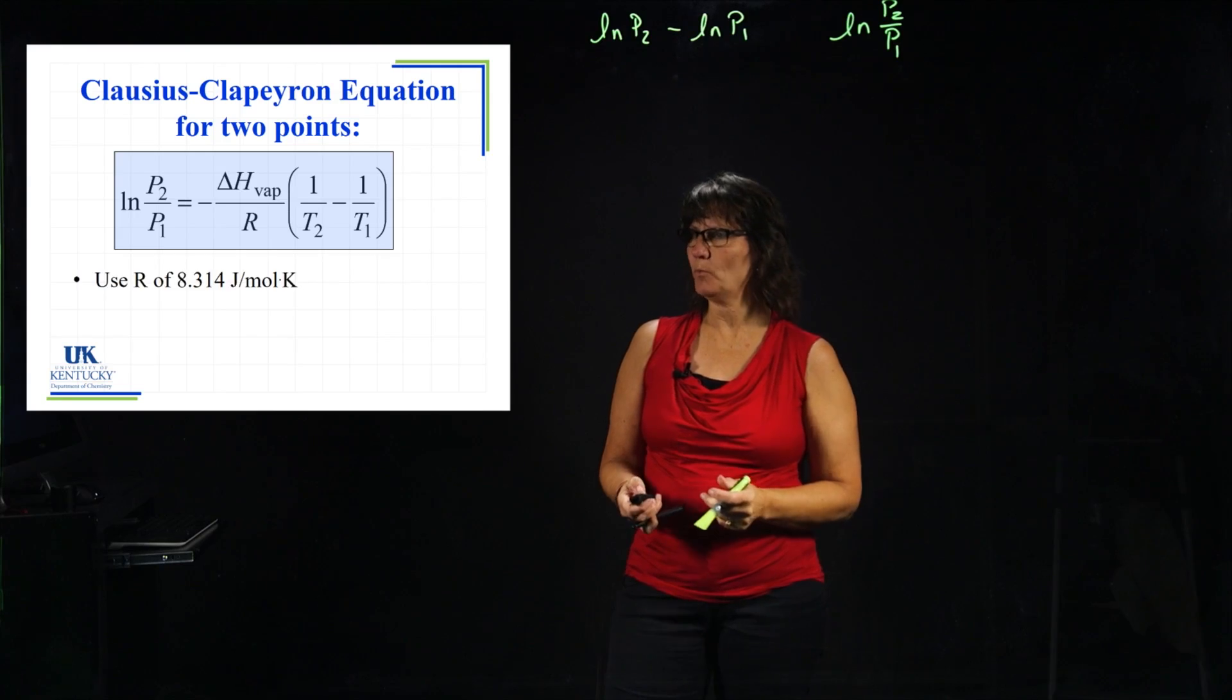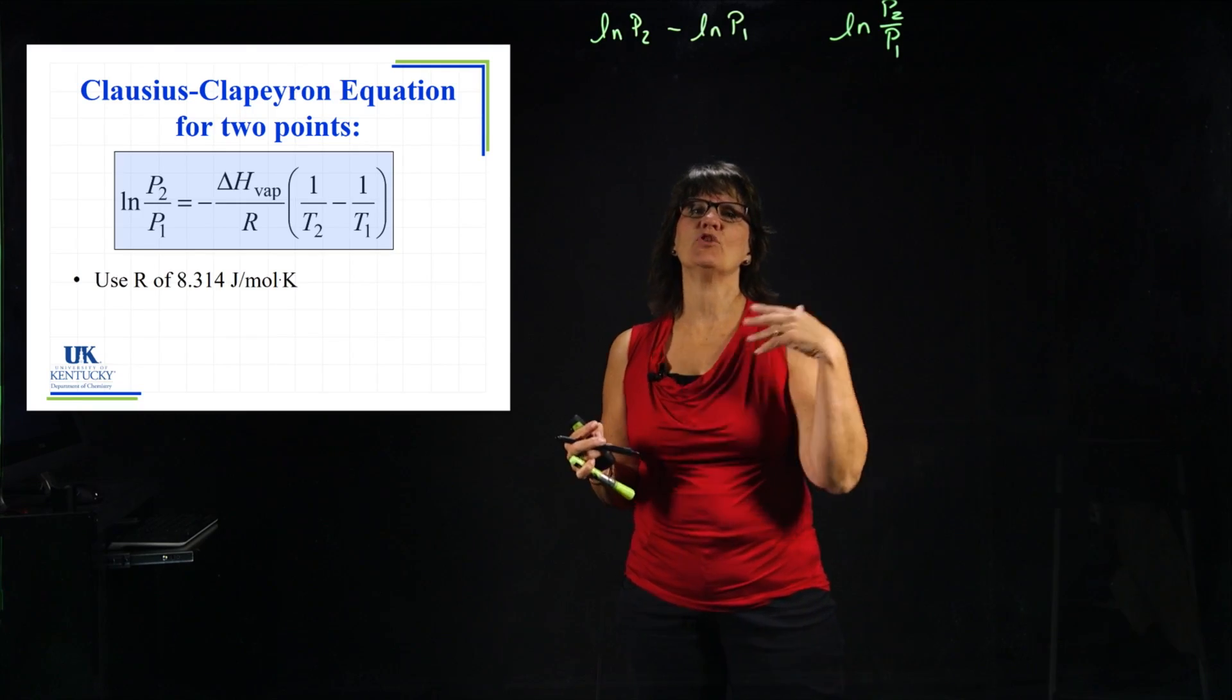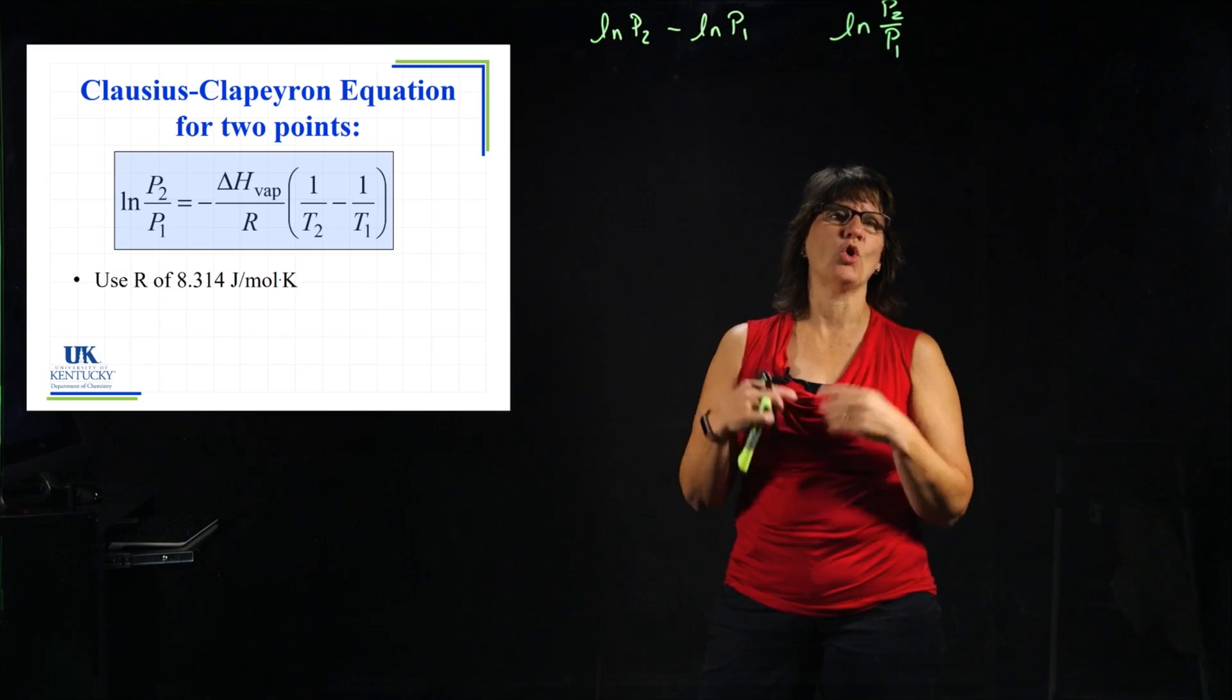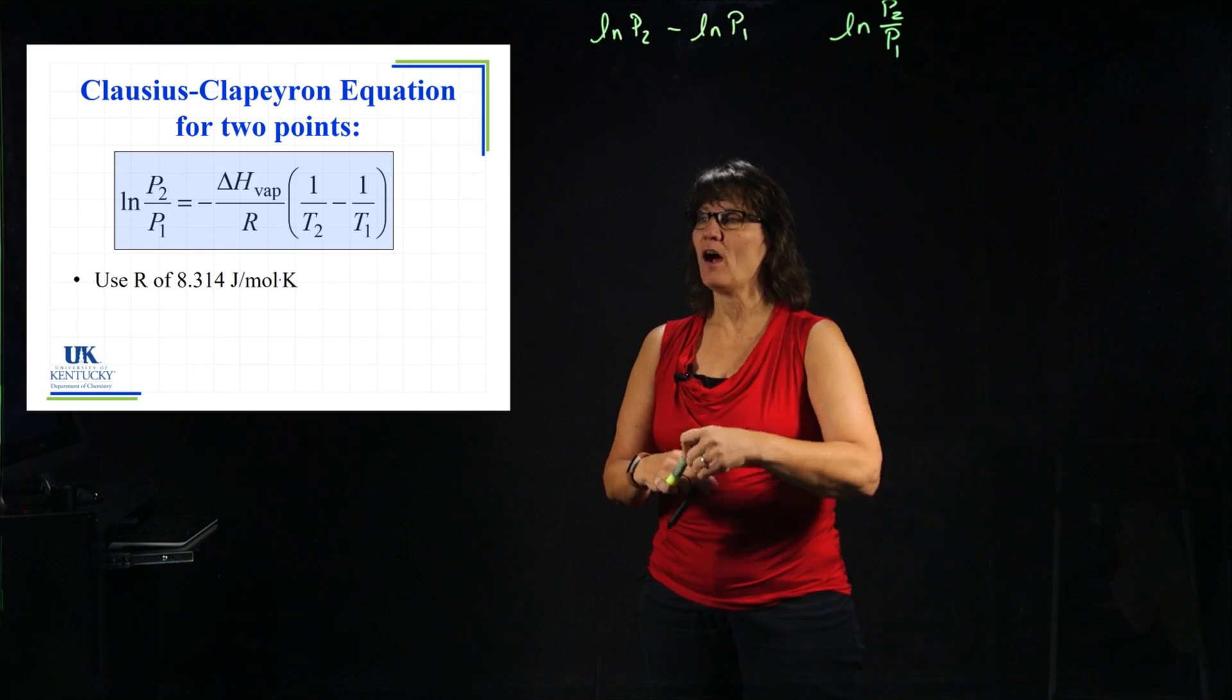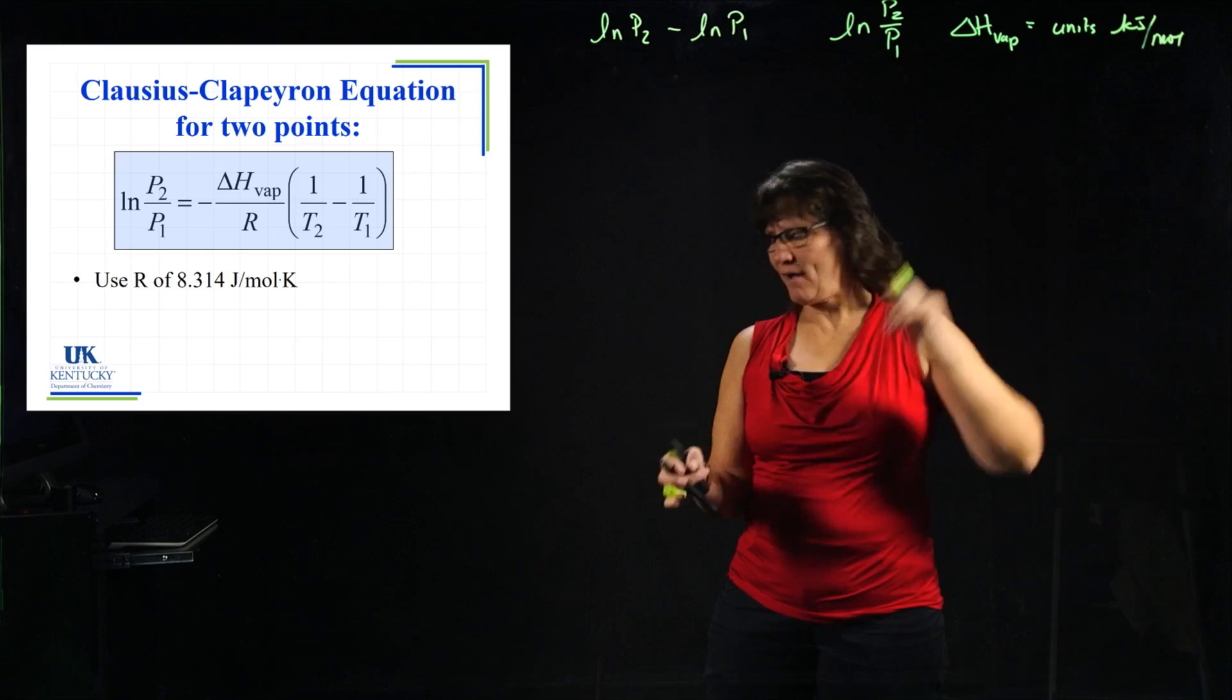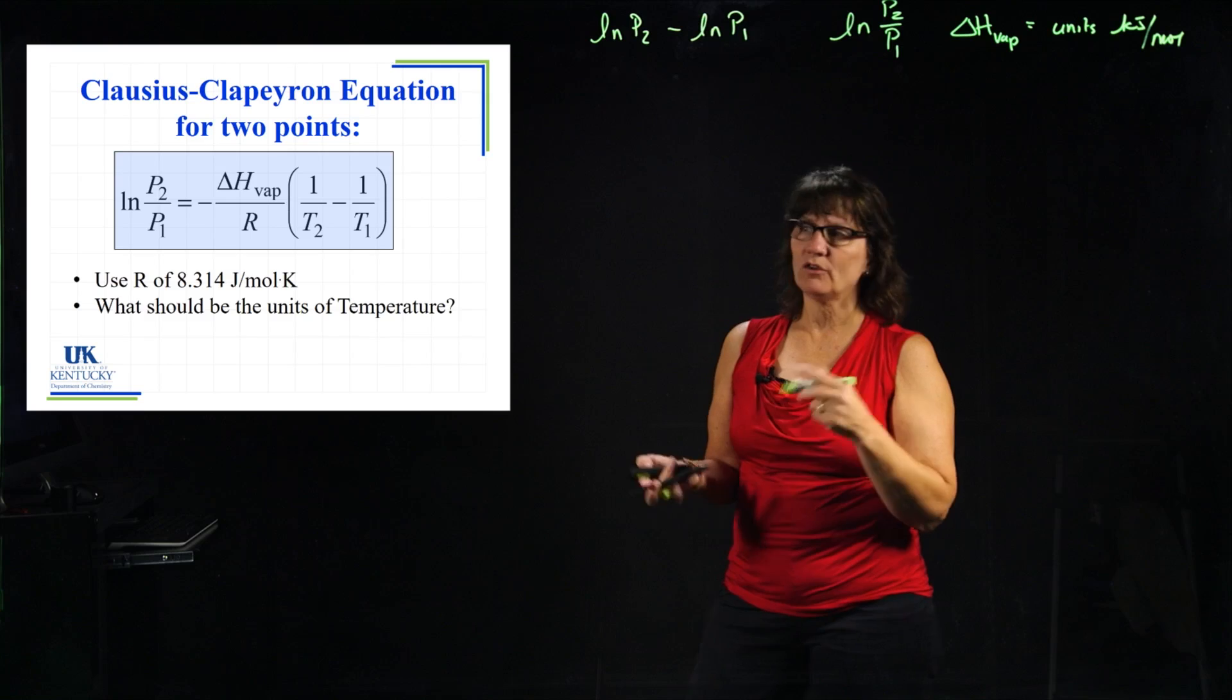With this equation, first of all, we need to realize what R we need to use. R is the ideal gas constant, and R is always a constant, but we have different units for it and different numerical values depending on which R we need to use. The reason we want to use this one is it has the energy unit of joule in there, and vapor pressure will be in the energy unit of joule as well. Although very often when you go to tables and look up values of delta H of vaporization, they're going to be in units of kilojoules per mole.